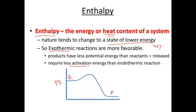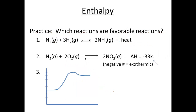Exothermic reactions require less activation energy than endothermic reactions, so they're more favorable because you only have to get a little bit of energy to reach activation, and then we release a lot of energy. For example, nitrogen plus hydrogen produces ammonia plus heat — if a reaction produces heat, it's exothermic, it's favored. Nitrogen plus oxygen producing N2O has a delta H of negative 33 kilojoules — negative numbers are exothermic, so again, this reaction is favored.